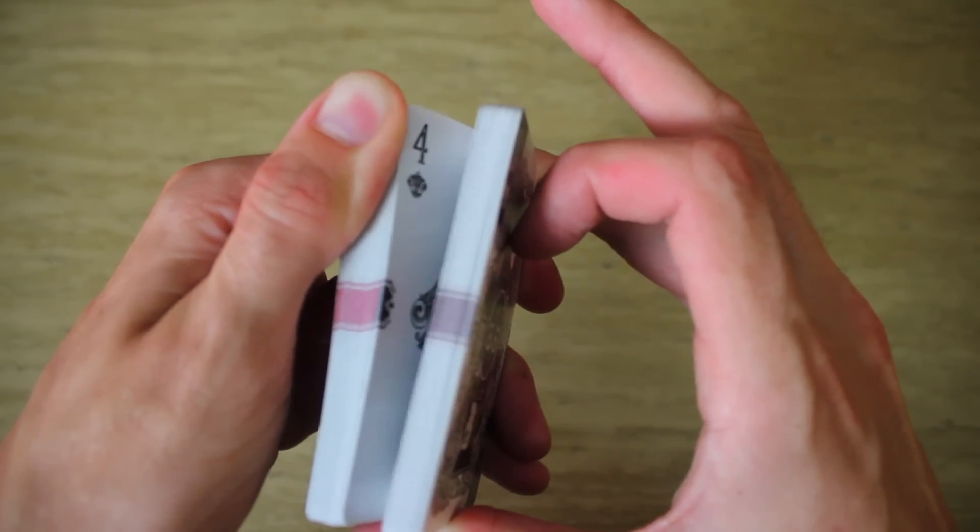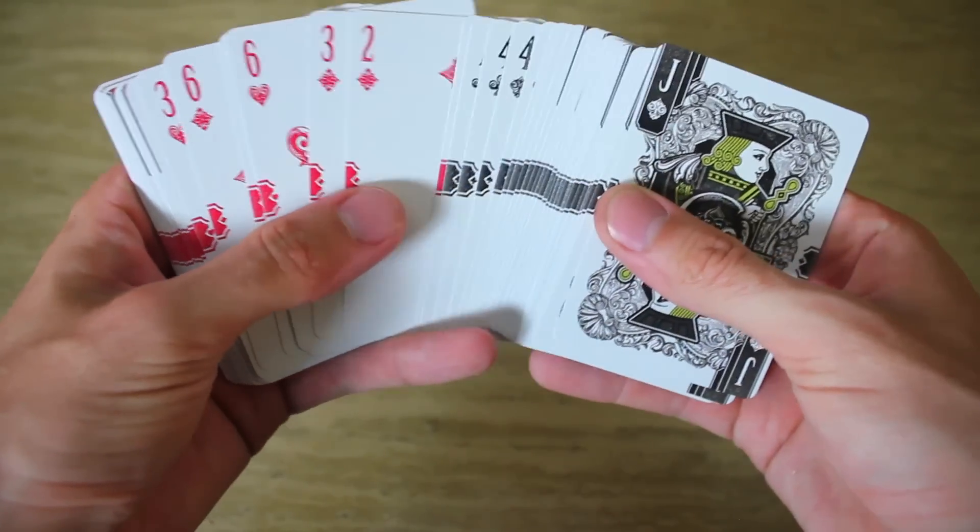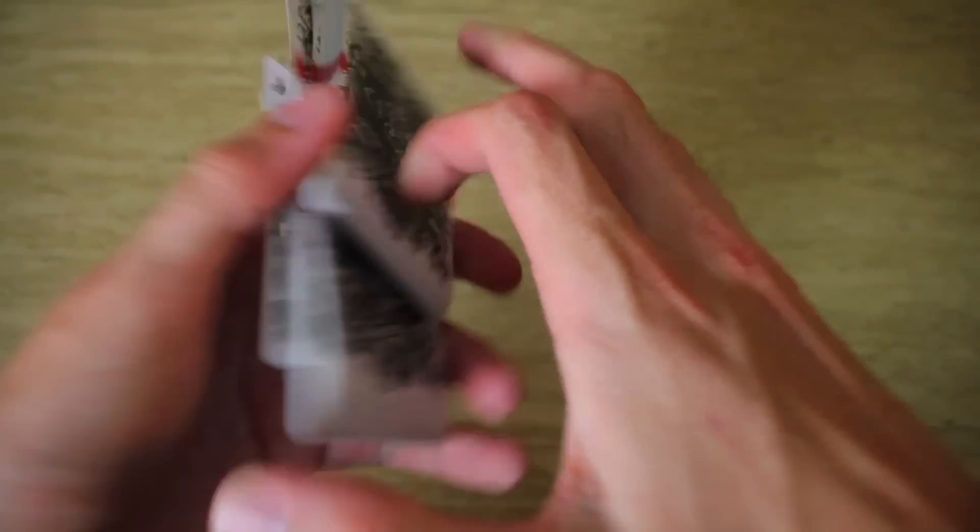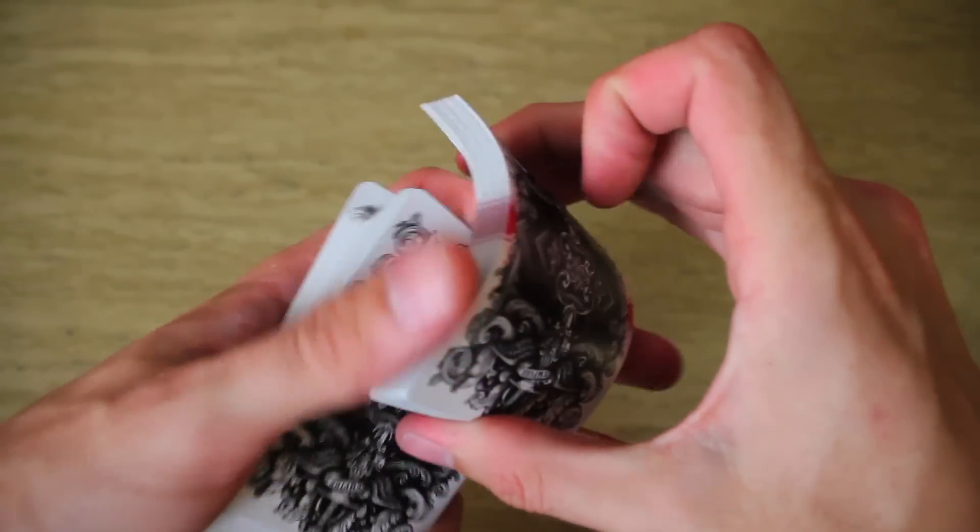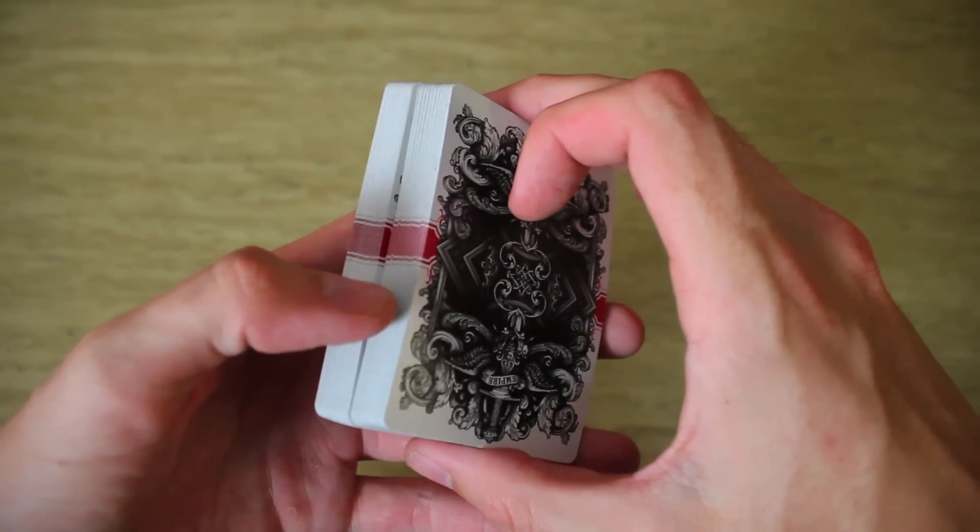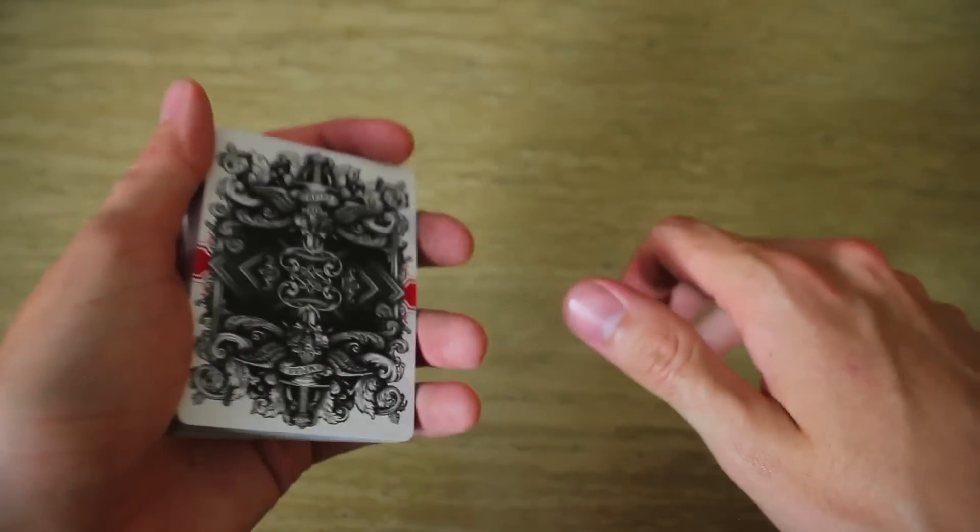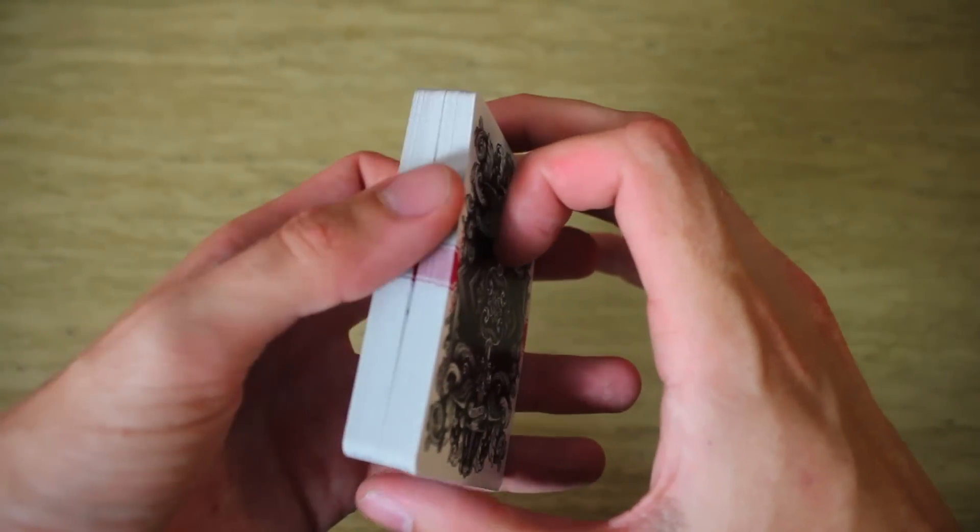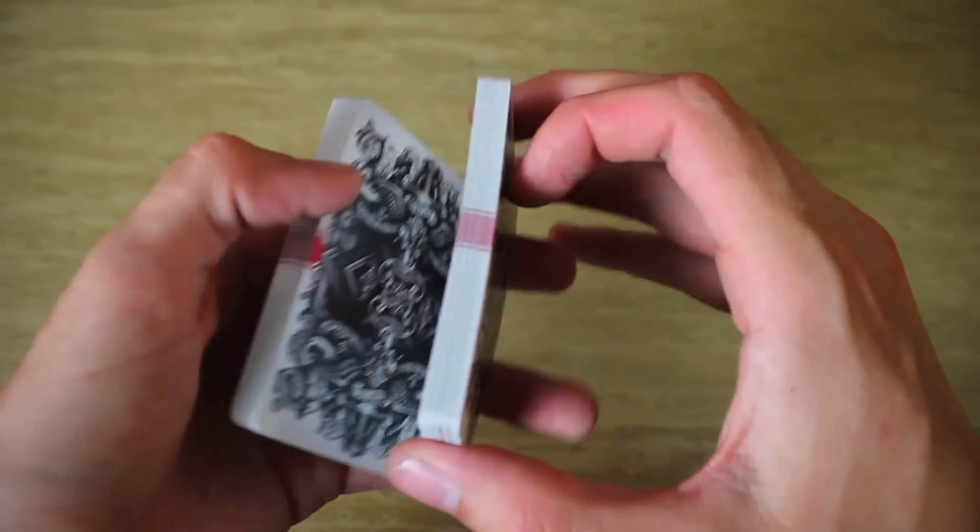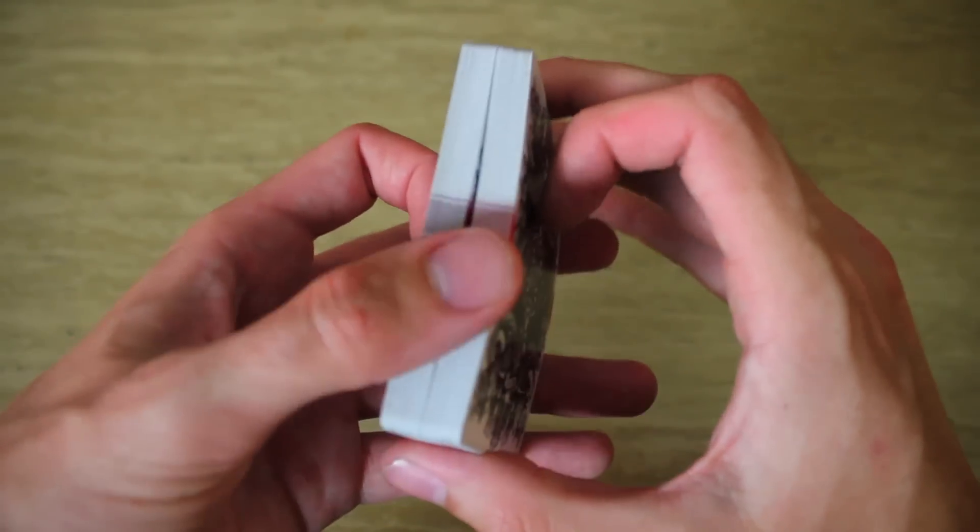Once you've separated the two colors and the blacks are on the bottom, reds are on top, you're going to go to where the red splits and you're going to crimp the cards. You're just going to put a bow in them. And what this does is it tells your mind where those two packets separate. Once that's done,